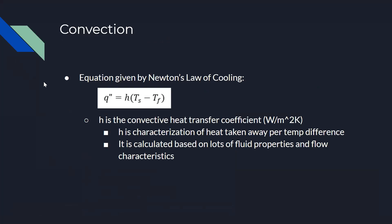Circling back to heat transfer types — in rocket engines the two major types are convection and conduction. For convection, combustion gases flow really fast over the combustion chamber and nozzle walls. Since the combustion gas is much hotter than the walls, there's strong convective heat transfer, described mathematically by Newton's law of cooling.